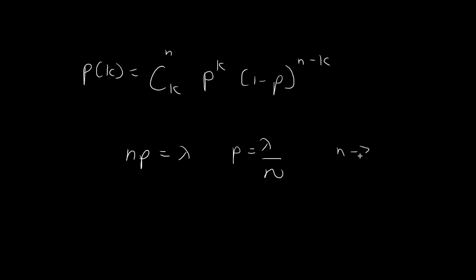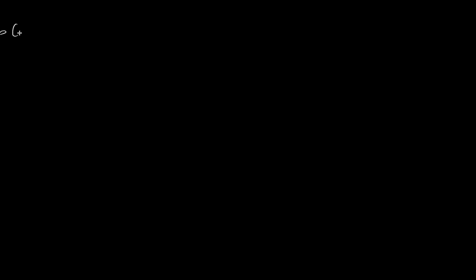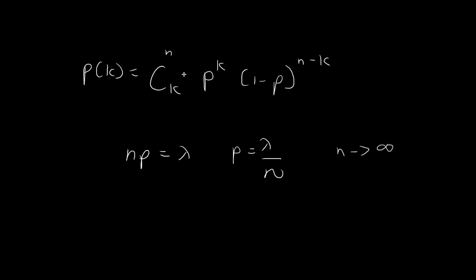We want to consider the case where n tends towards infinity, so we have many, many trials, and p becomes very, very small. We want to show that under this constraint, as the number of trials grows towards infinity, the probability mass function will tend towards the probability mass function for the Poisson distribution. We can show this by considering the expression for the PMF and seeing what happens as n tends towards infinity.